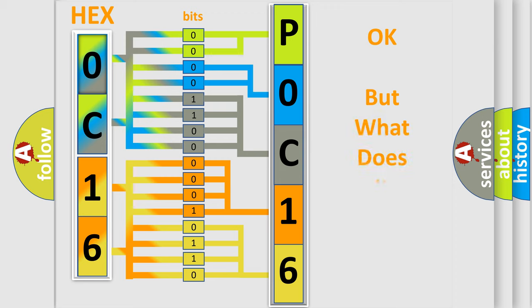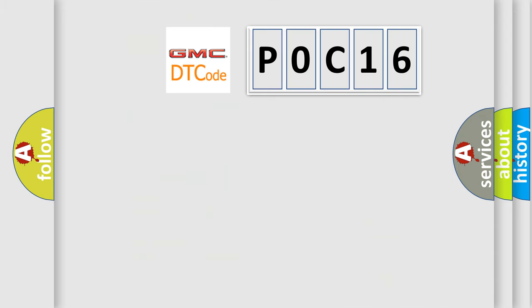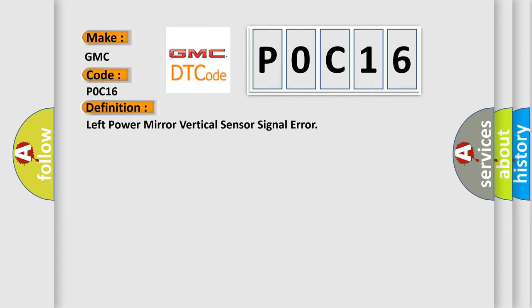We now know in what way the diagnostic tool translates the received information into a more comprehensible format. The number itself does not make sense to us if we cannot assign information about what it actually expresses. So, what does the diagnostic trouble code P0C16 interpret specifically for GMC car manufacturers? The basic definition is: Left power mirror vertical sensor signal error.